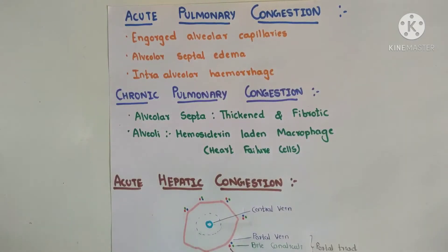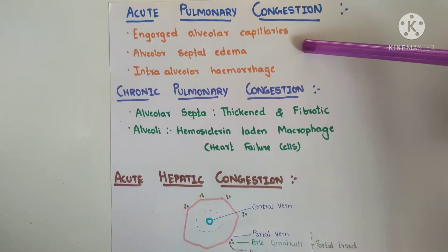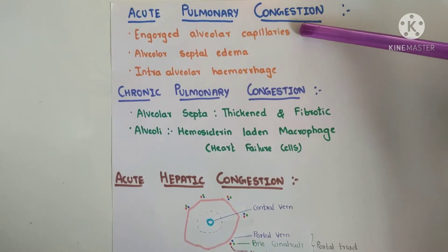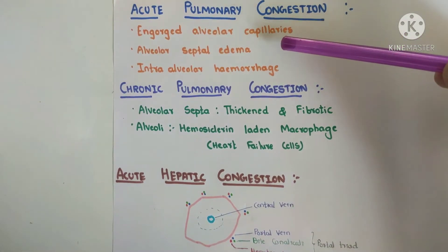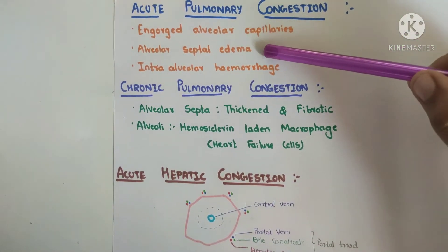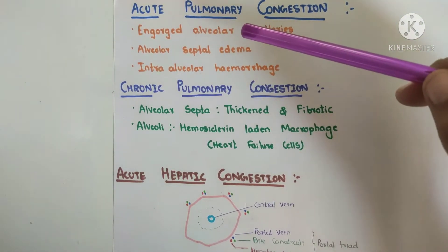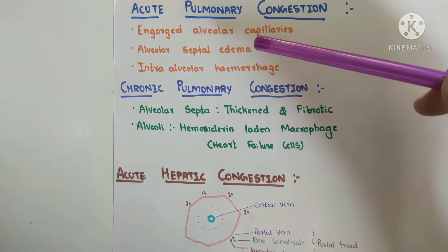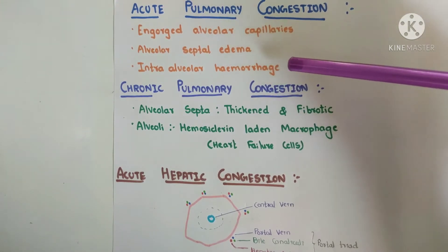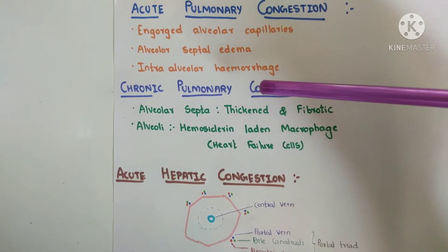Now let's look at acute pulmonary congestion, where the pulmonary congestion is sudden. Due to venous obstruction we can see engorged alveolar capillaries. Due to high hydrostatic pressure, edema occurs — that is, blood fluid moves out of the vessels — and we can observe alveolar septal edema. Slowly the capillaries will break down and hence there will be intra-alveolar hemorrhage.